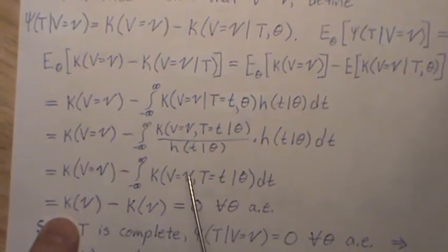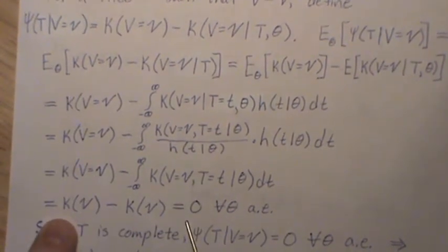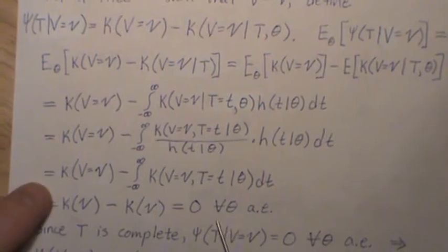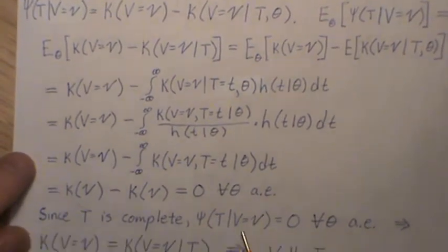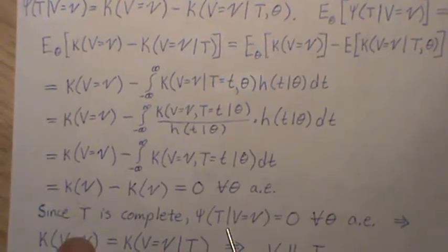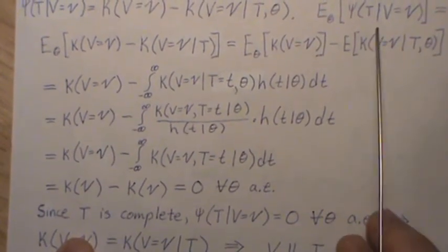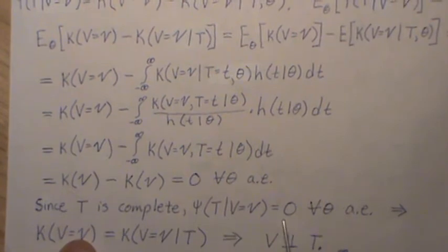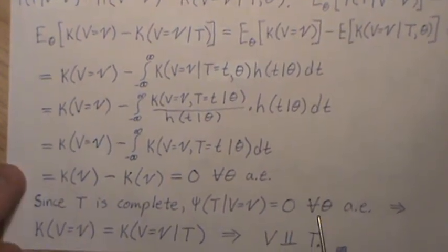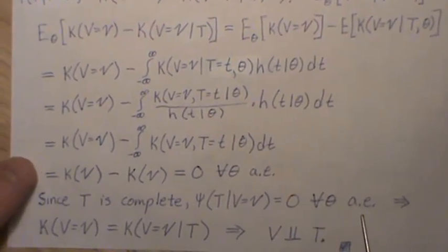So we get k of v minus k of v, which is zero, and this is for all theta almost everywhere. Now since t is complete, this expected equals zero, that means this function is zero, almost everywhere, for all theta almost everywhere.